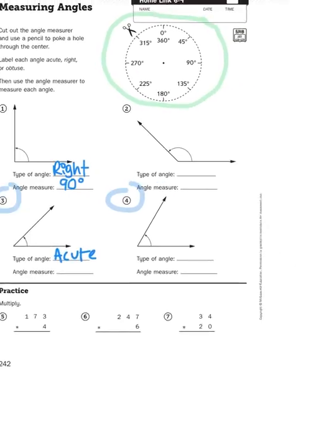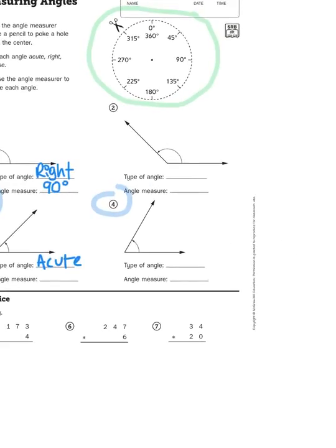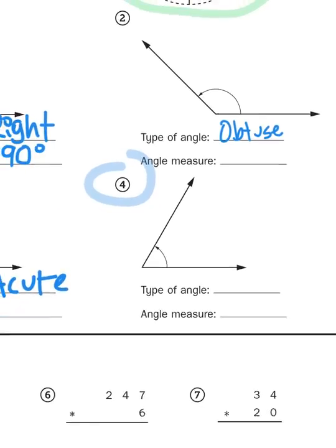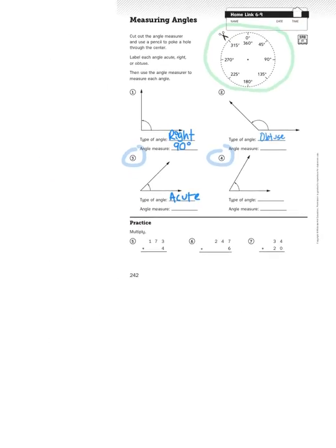And then any angle that is more than 90 degrees, of course, is going to be obtuse. So use your protractors, whichever protractor you want to use, to measure the angles to the nearest five degrees.